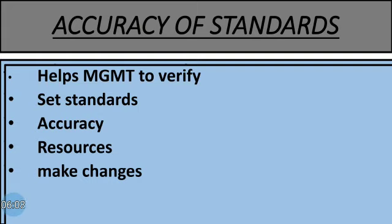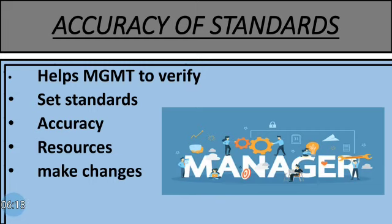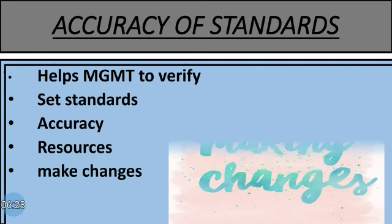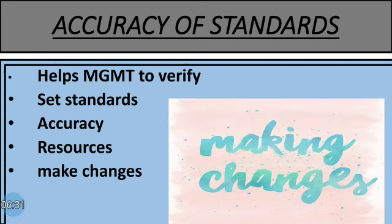Accuracy of standards: a good control system is one where the manager verifies or checks whether the set standards are accurate or not. This raises questions like — are the set standards achievable? Are they accurate? Do they have resources to accomplish the set standards? Are they in a position to make changes? A good control system enables management to verify and review the set standards again and again in the light of any changes.